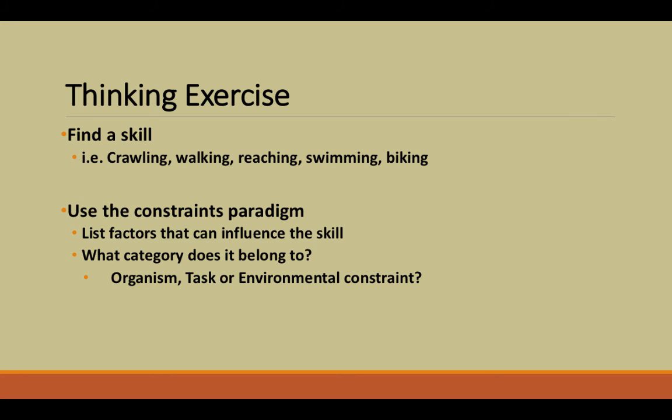Now that we've gone over the constraints, let's do a thinking exercise. Find a skill of your choice — such as crawling, walking, reaching, biking, or any sport you can think of — and use the constraints paradigm to list the factors that influence the skill, then categorize them into one of the three constraint categories. We'll pause the video here, and at the start of the next video I will pick an example to go over and we can discuss it.